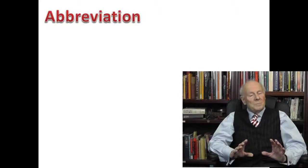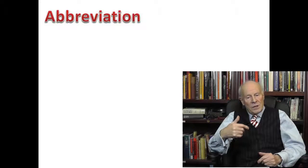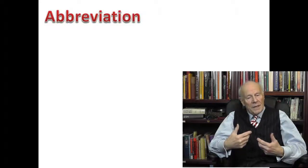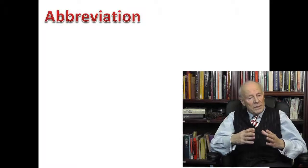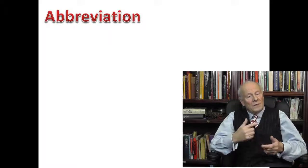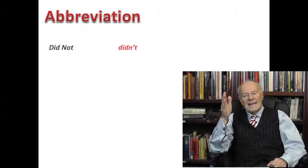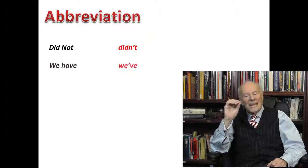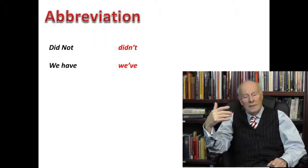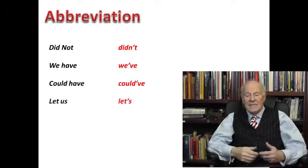We often abbreviate words — shorten them by dropping a few letters, or by joining two words together and losing some letters in the process. It's done much more in conversational English rather than in formal English. For example: 'did not' becomes abbreviated to 'didn't'; 'when we speak' becomes 'we've'; 'could have' becomes 'could've'.